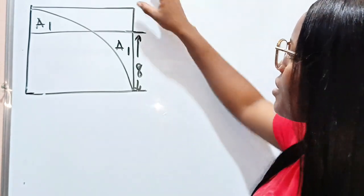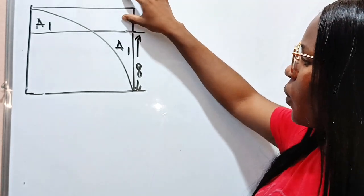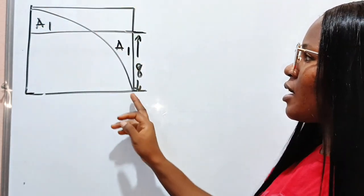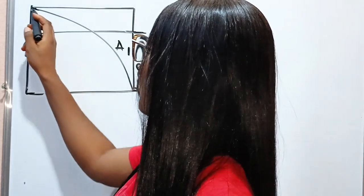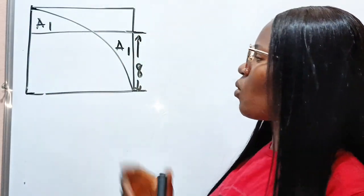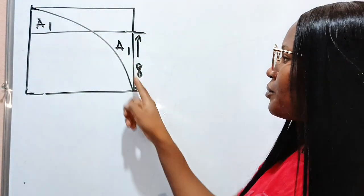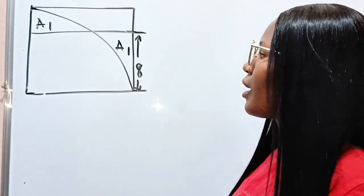And this is a square. And inside this square, a quadrant of a circle is inscribed. Please, this quadrant starts from here. So this is the quadrant of a circle here.